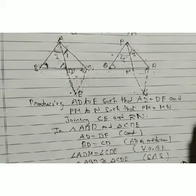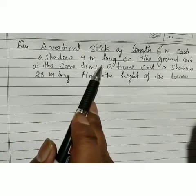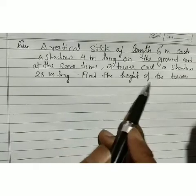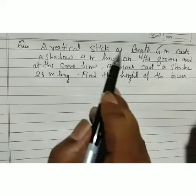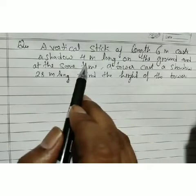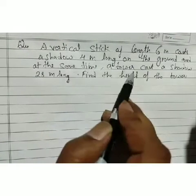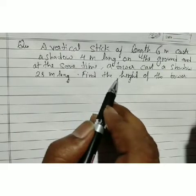Now we move to the next problem. A vertical stick of length 6 meters casts a shadow 4 meters long on the ground. At the same time, a tower casts a shadow 28 meters long. Find the height of the tower.